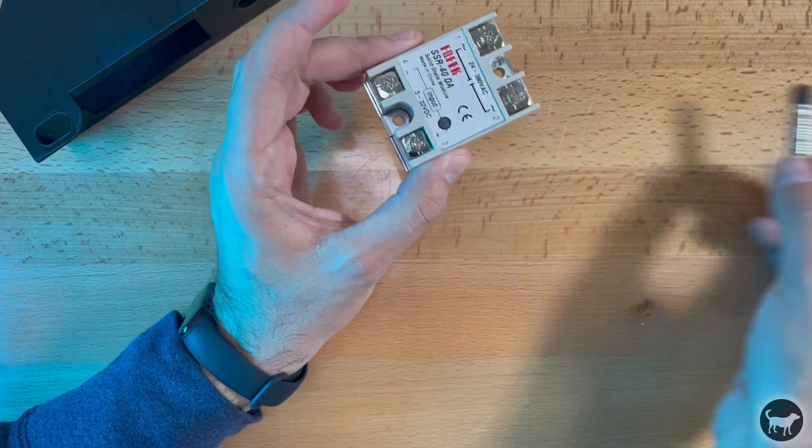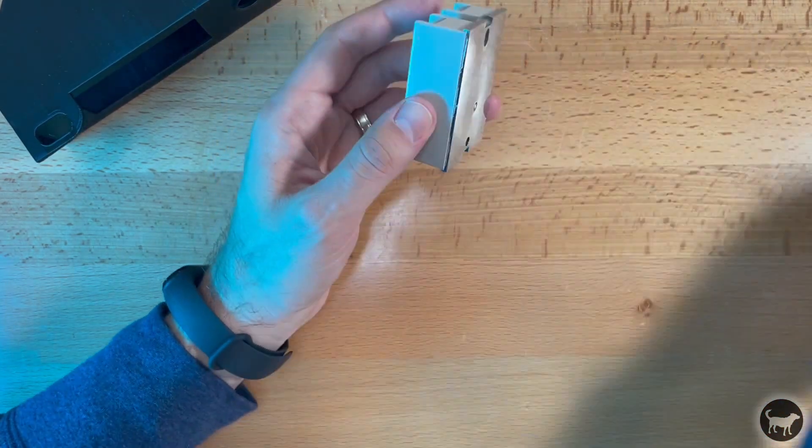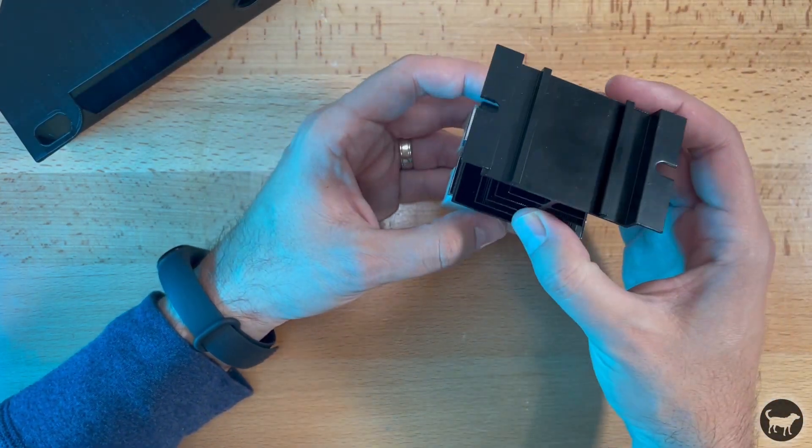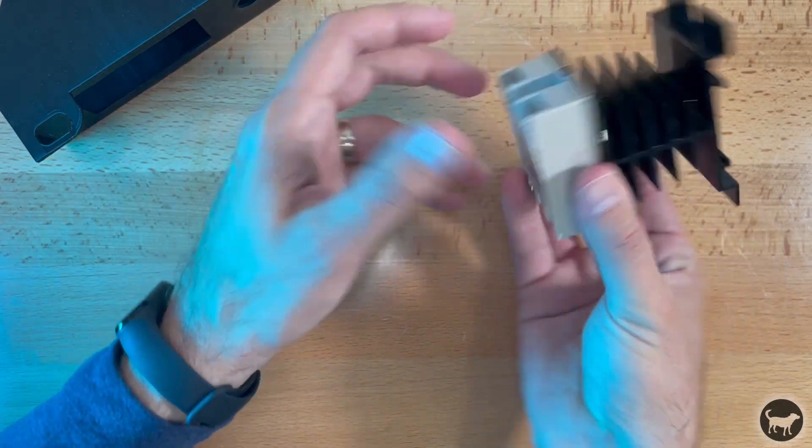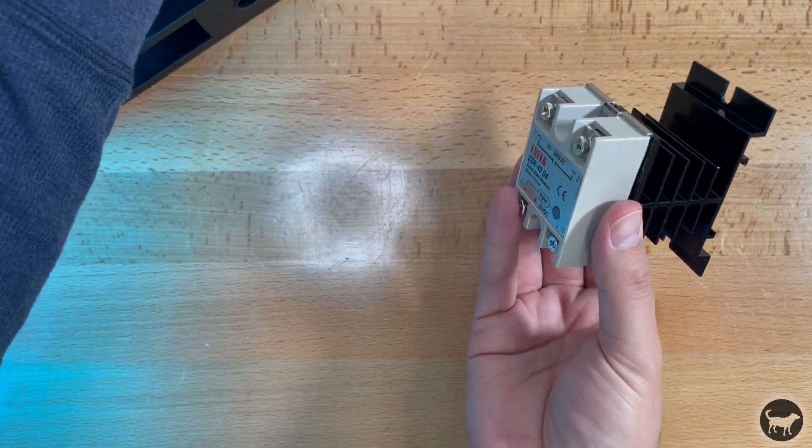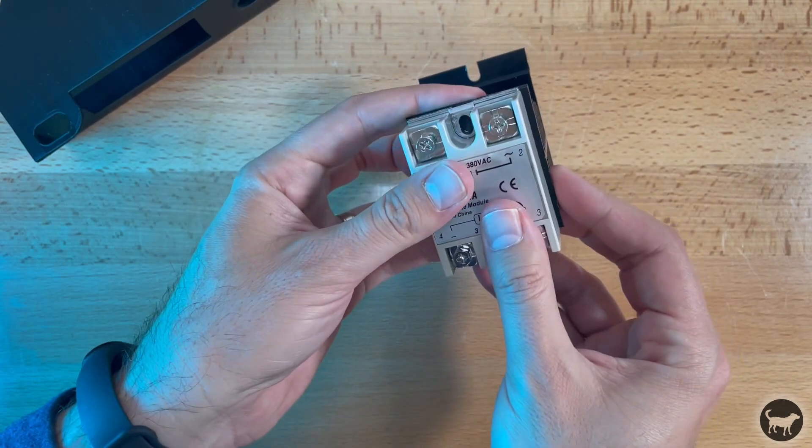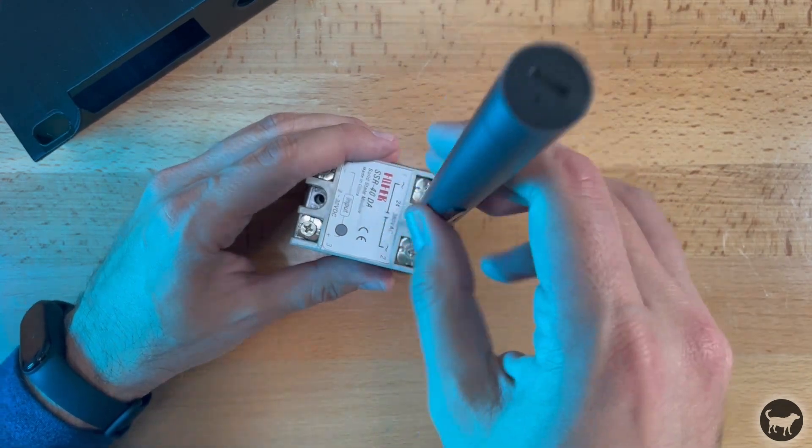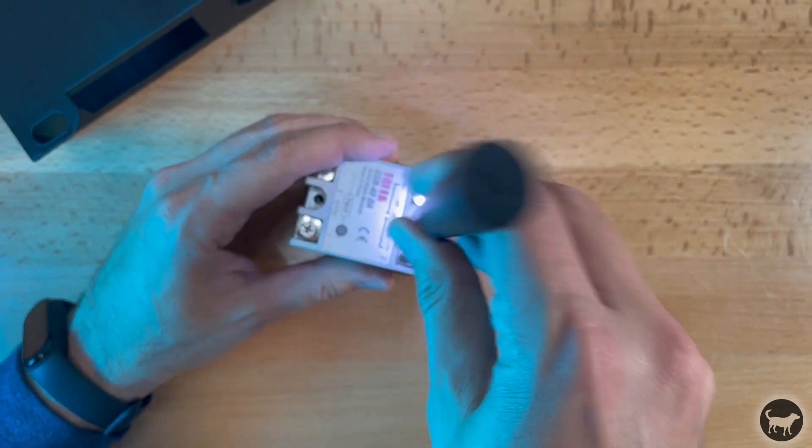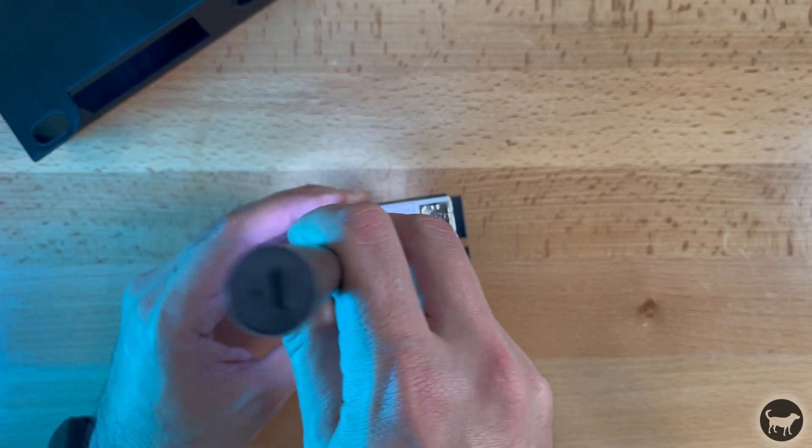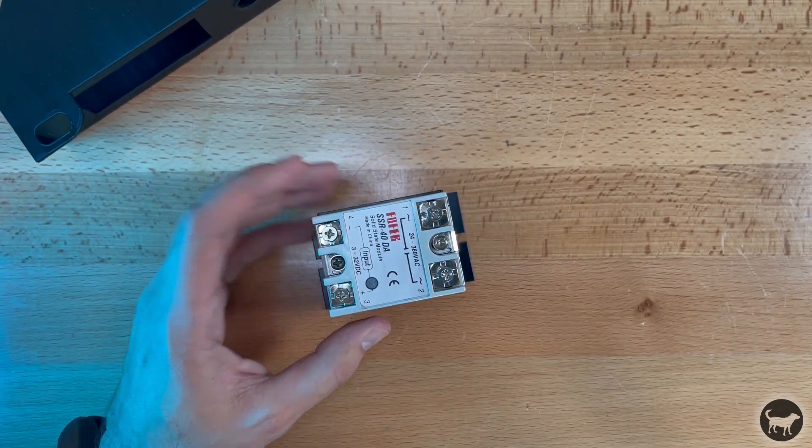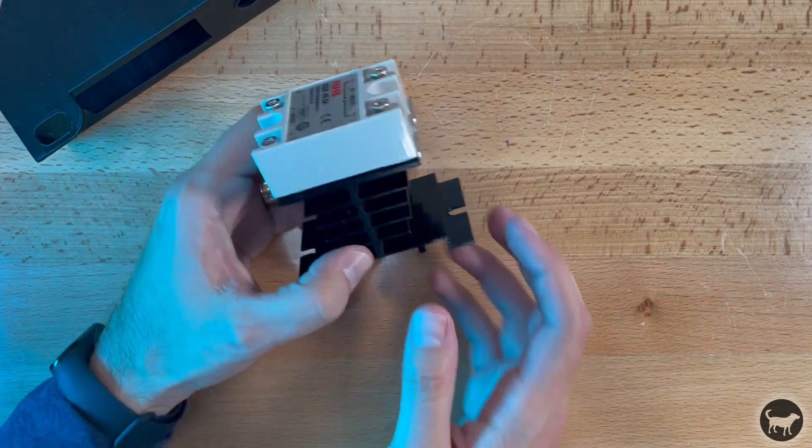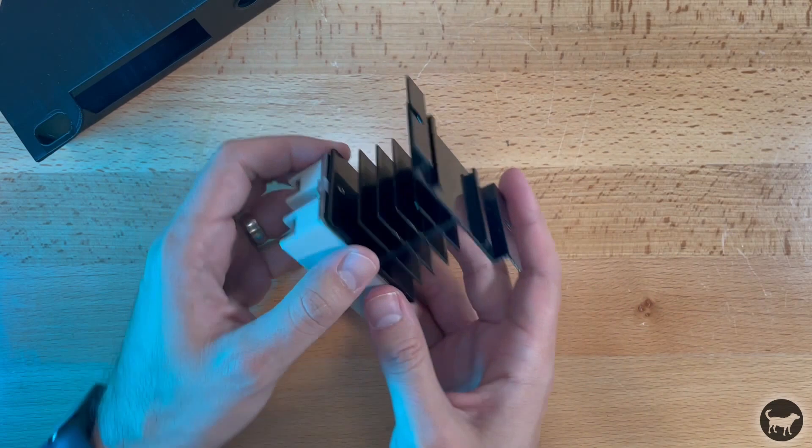I'm not going to do it to this one just because I'm not doing this right now, but you want to put a thin coating and then you're going to take your fin and you're going to attach your fin to the underside with the thermal paste on it, and then you're going to screw those two together. So I'll do that now.